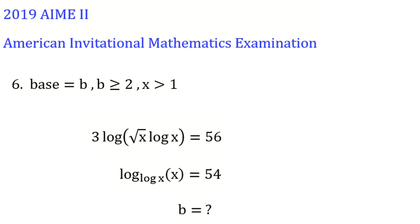Let's read it. All bases that are not specified — for example, like these — all bases are b, where b is at least 2 and x is at least 1. We have: 3·log(√x)·log(x) = 56, log base log(x) of x = 54, and the problem asks: b equals what?